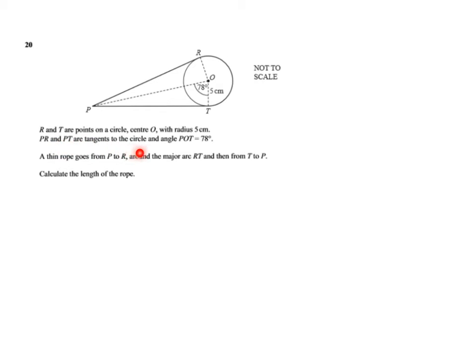PR and PT are tangents to the circle and angle POT is 78. That's important because these are from an external point tangents, and the angle between a tangent and the radius is 90 degrees. I'm going to put that in my diagram, 90 degrees. The other thing important to realize from circle theorems is that the lengths of those tangents from an external point are equal.